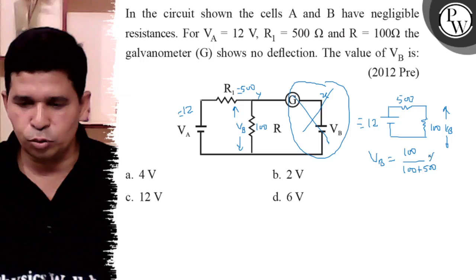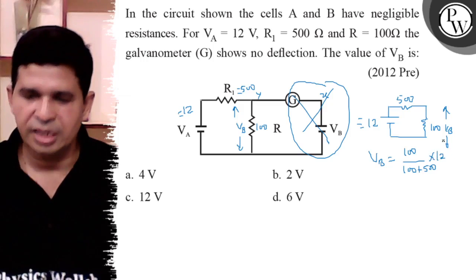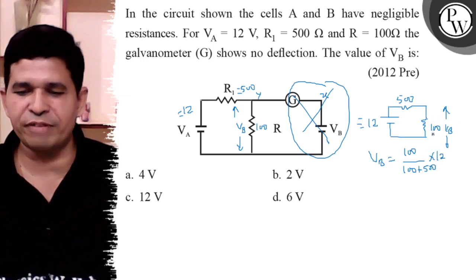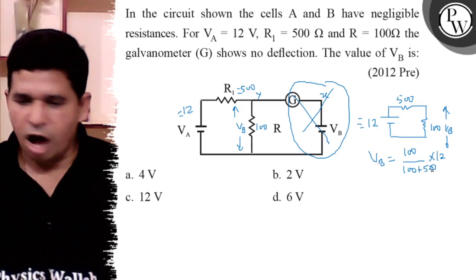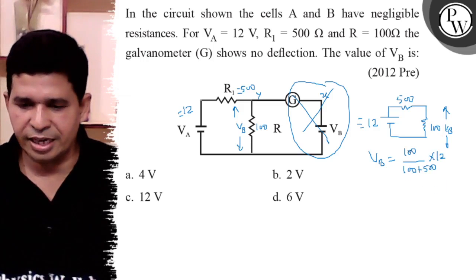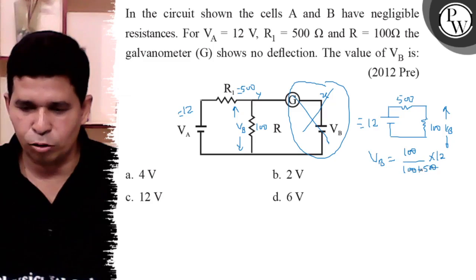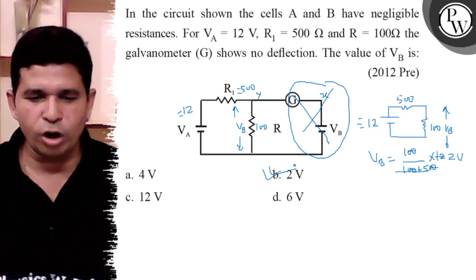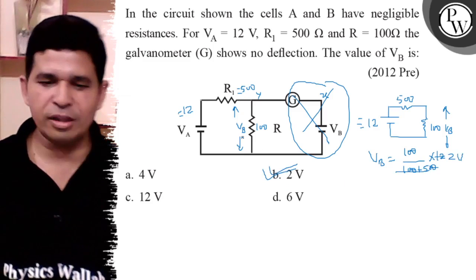multiplied by 12, because it is distributed in the ratio 100:500. Now it is 600, the zeros cancel out, 100/600 = 1/6, so 1/6 × 12 = 2 volt. So the final answer is (b) 2 volt. Thank you, all the best!